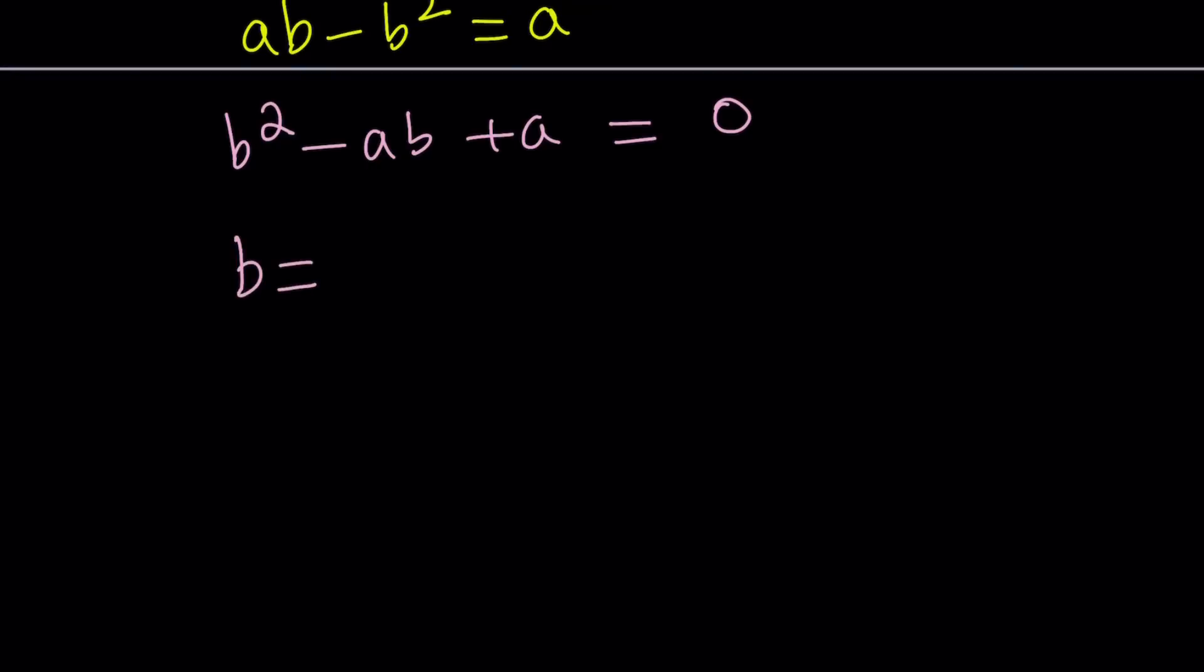Negative b, it's kind of confusing because b is, in this case, negative a. So b can be written as a plus or minus the square root of the discriminant, b squared minus 4ac, but b squared is a squared minus 4ac. So that's just going to be 4a, and that is divided by 2 because the coefficient of b squared is 1.